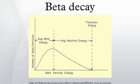Electron capture is sometimes included as a type of beta decay, because the basic nuclear process, mediated by the weak force, is the same. In electron capture, an inner atomic electron is captured by a proton in the nucleus, transforming it into a neutron, and an electron neutrino is released.